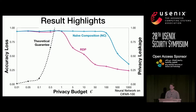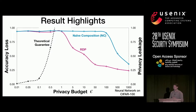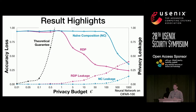Recent advances such as Rényi differential privacy try to bridge this gap. They achieve better accuracy, but even for them, in the range where we have a theoretical guarantee, there is no useful learning going on. We went ahead and empirically analyzed the privacy leakage using actual practical attacks, and it turned out there is a huge gap between what can be observed theoretically and what these empirical attacks achieve. In general, as the model starts to learn more, the leakage increases.